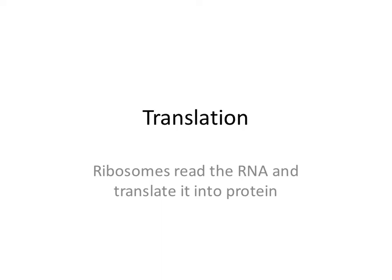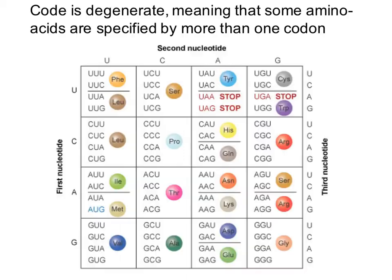Translation is the process of reading the messenger RNA and translating that information into protein, orchestrated by ribosomes. A very important component of translation is how the RNA codes for its particular amino acid. We have 21 amino acids, and each of those amino acids has a particular sequence that codes for them, and sometimes they will have more than one sequence.